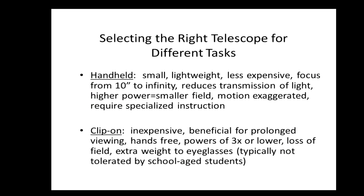Think of the many things you look at through the day — is your student doing this? While there are many styles of distance devices, they can be divided into two categories most prescribed by low vision specialists. Handheld devices are small, lightweight, and relatively inexpensive. Some have short focus capability, which comes in handy for looking through a glass display case. We typically see devices ranging in power from 2.5x to 8x with children. However, the higher the power, the less light coming into that barrel, making it difficult for students with etiologies such as retinopathy of prematurity and optic nerve hypoplasia where lighting is a crucial factor in clarity. Handheld devices will require specialized instruction.